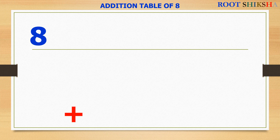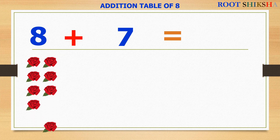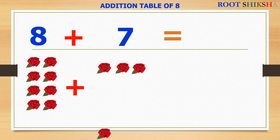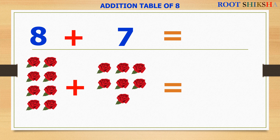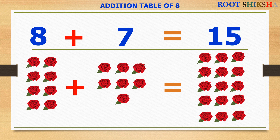8 plus 7 equals to — count with me: 1, 2, 3, 4, 5, 6, 7, 8. 8 plus 7 equals to: 1, 2, 3, 4, 5, 6, 7. 8 plus 7 equals to: 1, 2, 3, 4, 5, 6, 7, 8, 9, 10, 11, 12, 13, 14, 15. 8 plus 7 equals to 15.